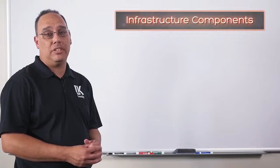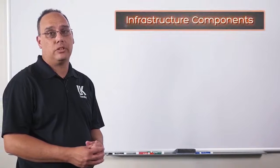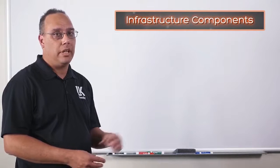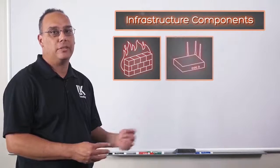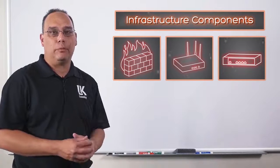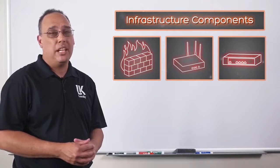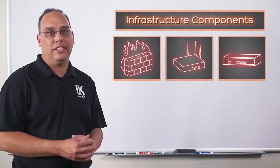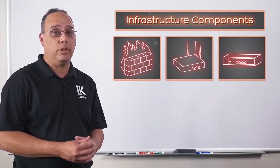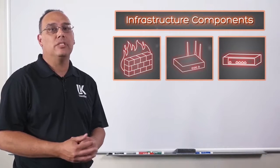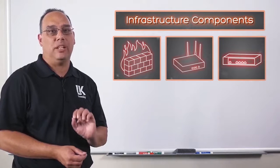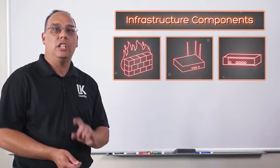The next topic we're going to examine is infrastructure components. We're going to look at three in particular: a firewall, access points, and a wireless LAN controller. Smaller networks will have, besides a router, merely a firewall and probably a single access point. The larger the network, the more access points you need, and when you have more access points than you can manage, it's time to invest in a wireless LAN controller.